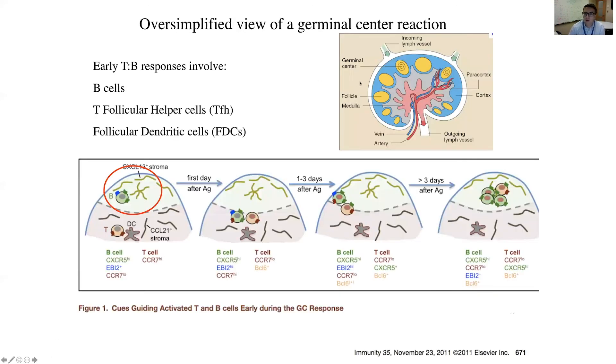The current understanding is that T cells and B cells interact in something called the germinal center reaction. The germinal center is within the B cell follicle of lymph nodes — when exposed to a pathogen in the periphery, antigens are brought in and B cells interact with T cells in a stepwise manner. Within the first day of antigen exposure, antigen is brought into the B cell follicle through macrophages and other B cells.